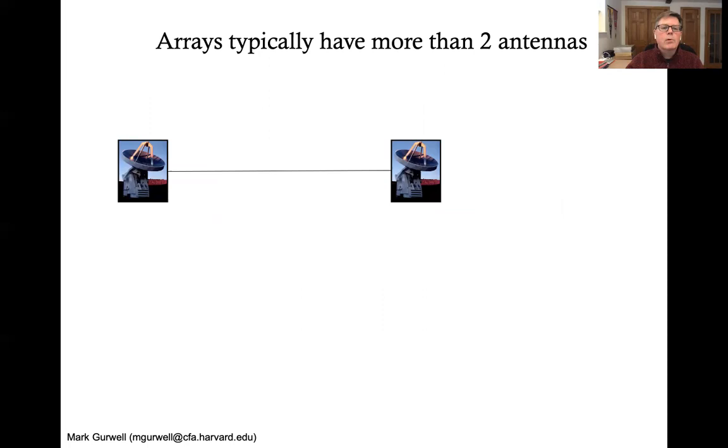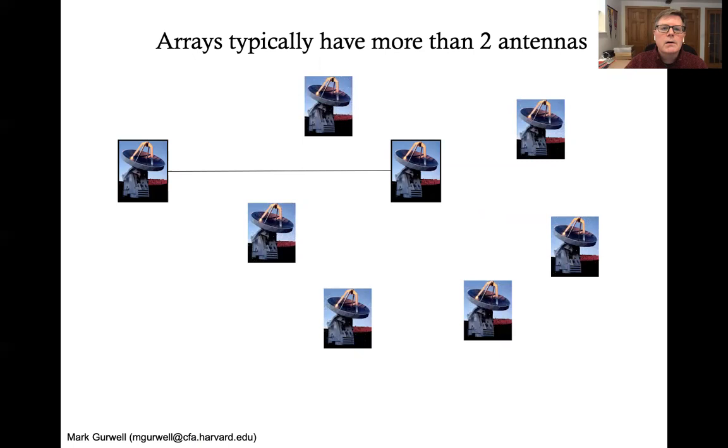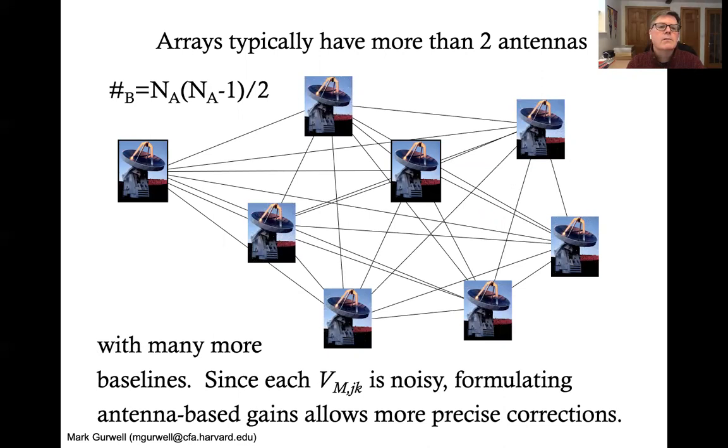Well, that's because antenna arrays typically have more than two antennas. Here's a two-element interferometer for the SMA, but the SMA is actually not a two-element interferometer. Of course, it has eight antennas, and if you add up all the baselines, there are a lot more baselines than antennas. In fact, you get the equation that's listed here to give you the number of baselines as a function of the number of antennas. And basically, it's an n-squared problem. So as you add more antennas, you have many more baselines.